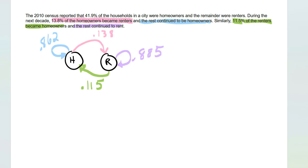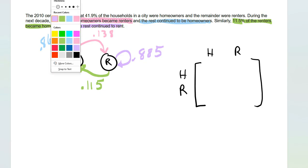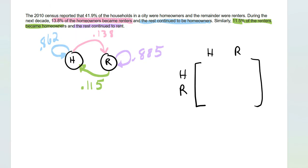So we're going to have a matrix that is homeowners, renters, homeowners, renters, and then H to H, that was the light blue. H to H, so 0.862 goes there.